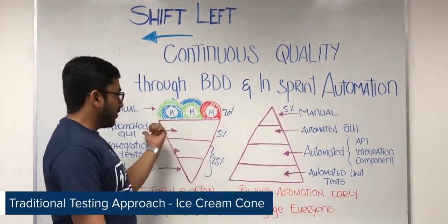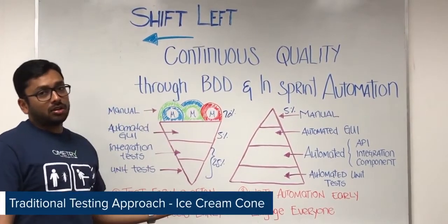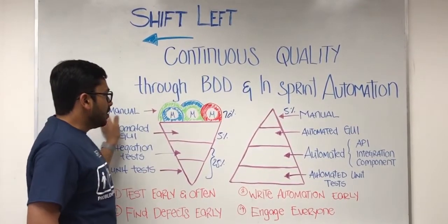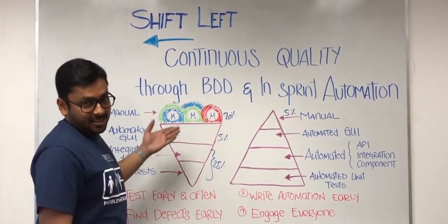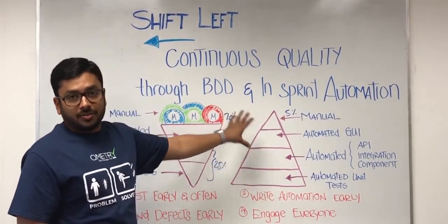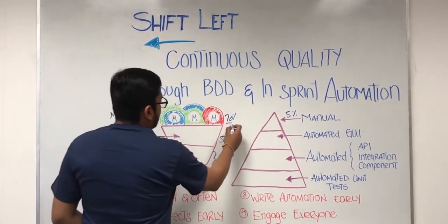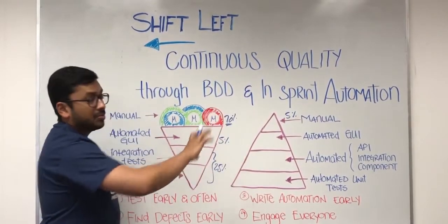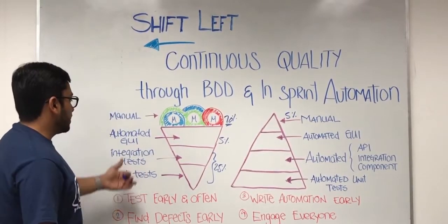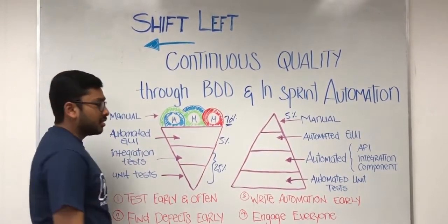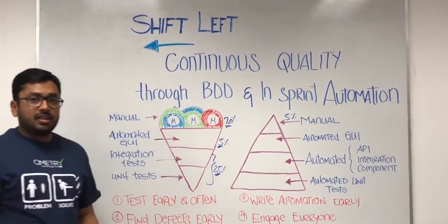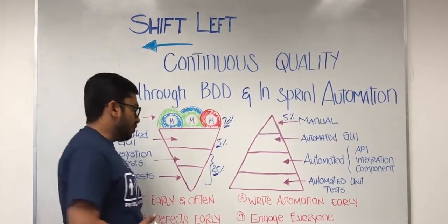Let's understand the conventional model versus the shift left model. On the left hand side we have the conventional model, which we call the ice cream cone model. The bulk of the testing — approximately 70% — is done manually, with very limited automation at the unit testing and integration test layers, making up only about 30%.